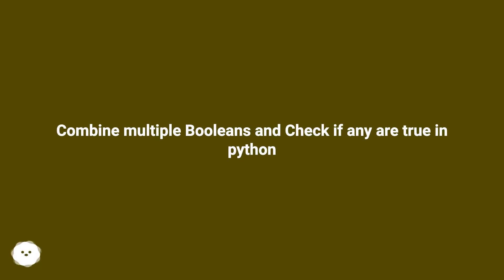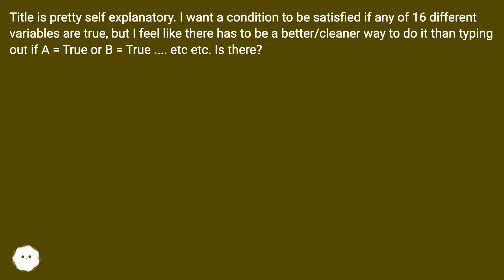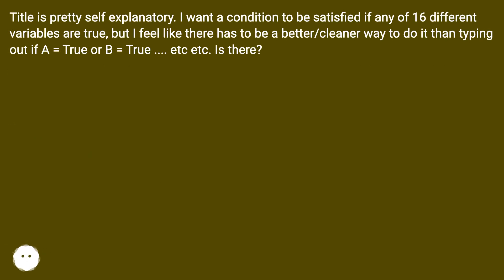Combine multiple booleans and check if any are true in Python. The title is pretty self-explanatory. I want a condition to be satisfied if any of 16 different variables are true, but I feel like there has to be a better, cleaner way to do it than typing out if a equals true or b equals true, etc.